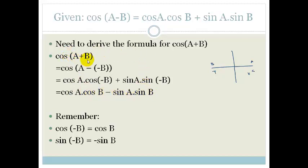So we can rewrite this as cos A cos B - sin A sin B. Therefore cos(A + B) = cos A cos B - sin A sin B. A helpful way to remember it: it goes cos cos, sin sin, and you change the sign. That's not something you have to memorize since it's on the formula sheet, but it's a nice rhyme to help.